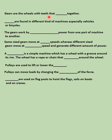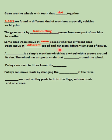Gears are wheels with teeth that slot together, meaning they grip one another. Gears are found in different kinds of machines, especially vehicles and bicycles. The gears work by transmitting power from one part of the machine to another. Same size gears move at the same speed, whereas different size gears move at different speeds and generate different amounts of power.